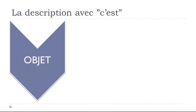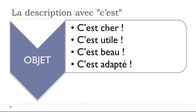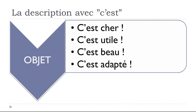It can be for an object — un objet — as well. 'C'est cher' (it's expensive), 'C'est utile' (it's useful), 'C'est beau' (it's beautiful), 'C'est adapté' (it's suited/adapted). Remember all these adjectives are at the masculine form.